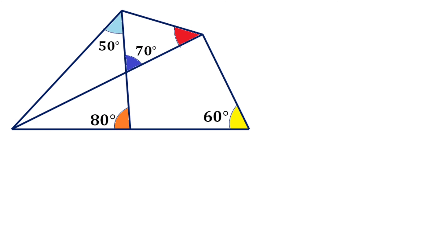So if I'm not wrong, whenever you tried solving this question, you will always be able to find some angles — like this angle is 70 degrees, this angle is 110 degrees, this angle is 110 degrees, this angle is 100 degrees, this is 90 degrees, this is 30 degrees, and this is 20 degrees. But how to get this red angle? That's still the question.